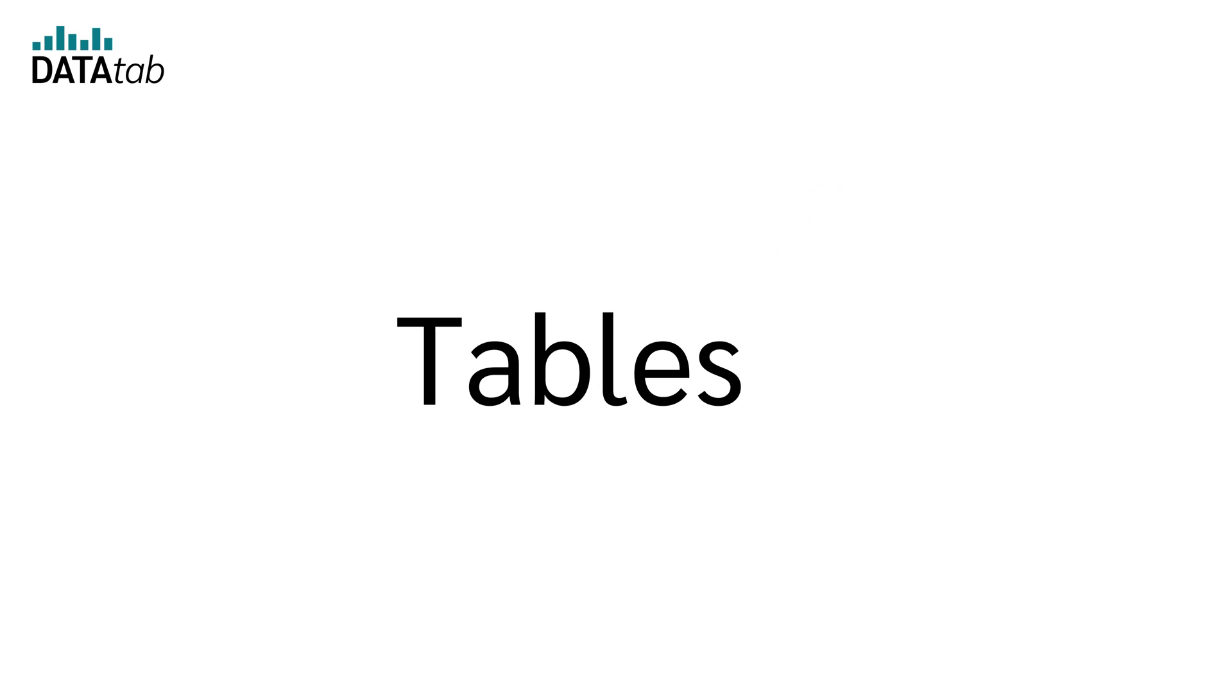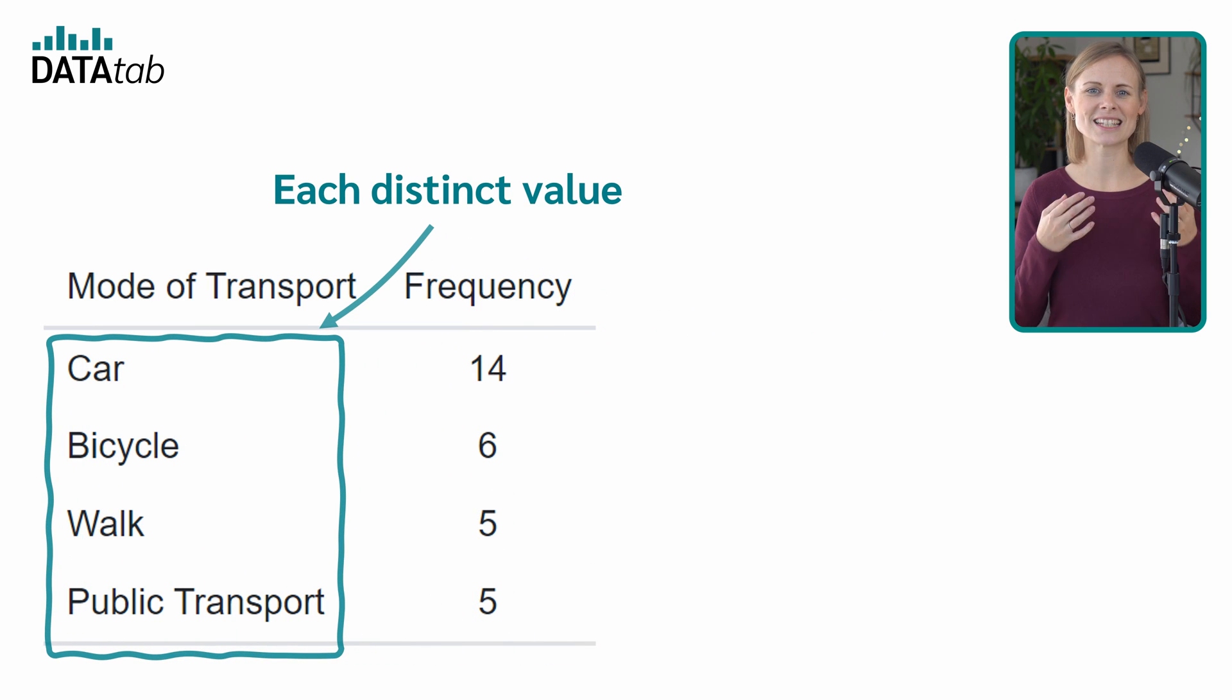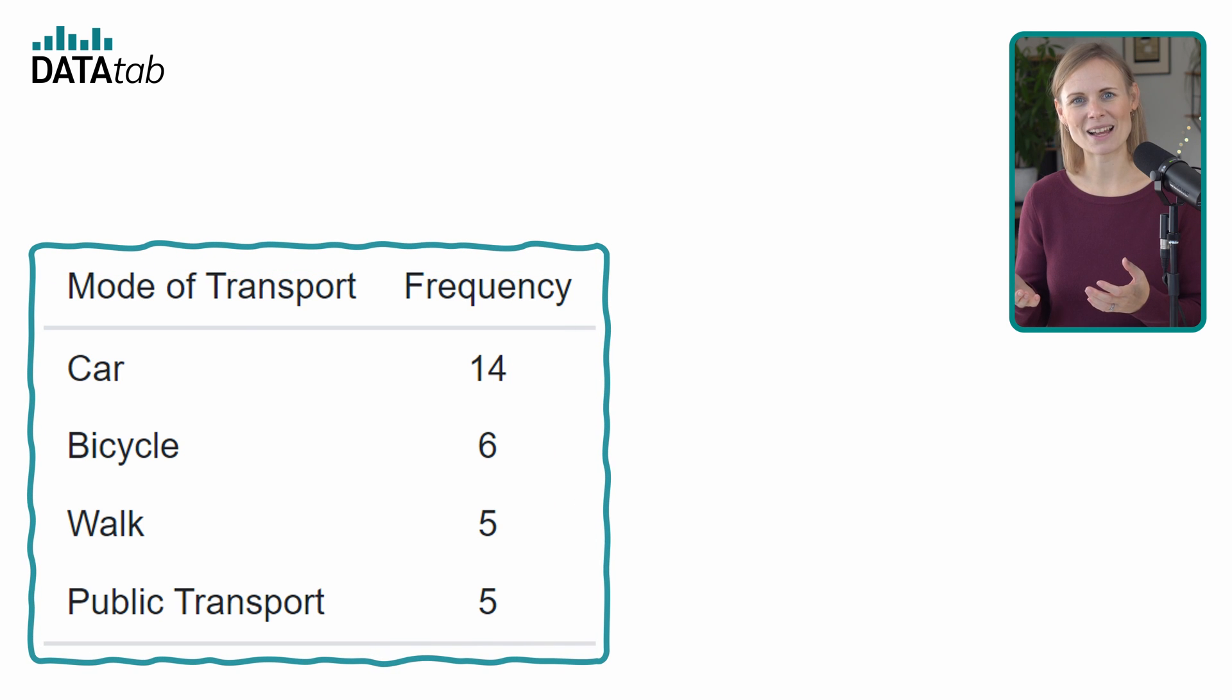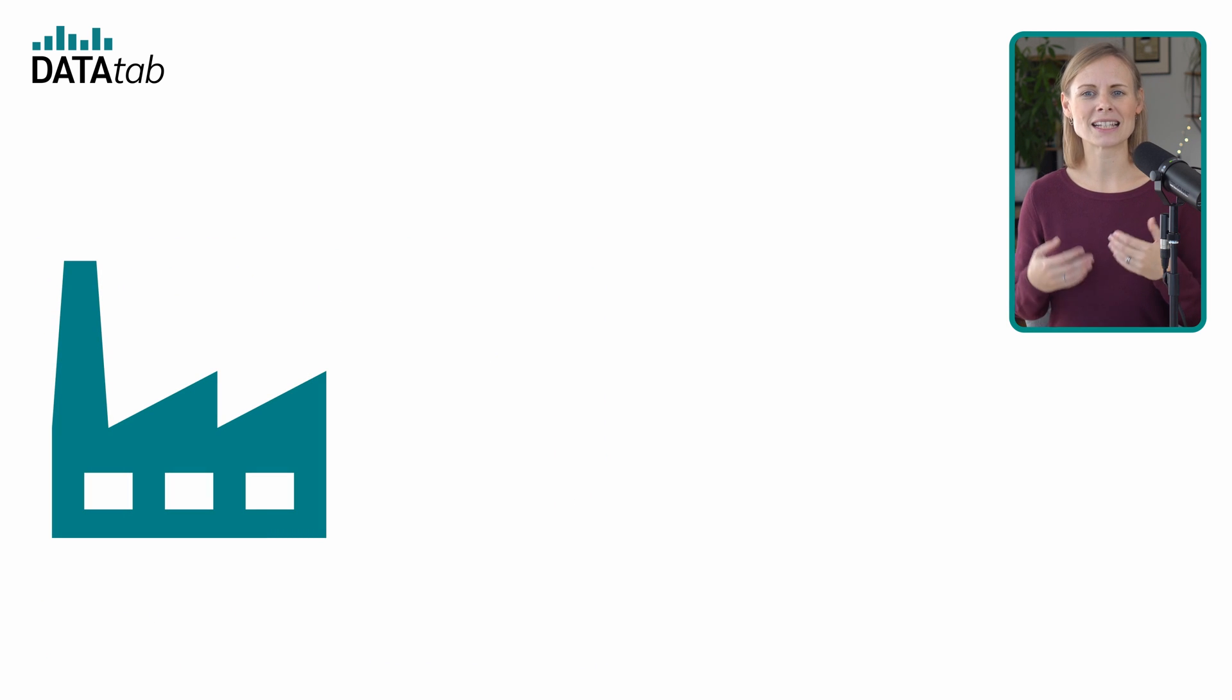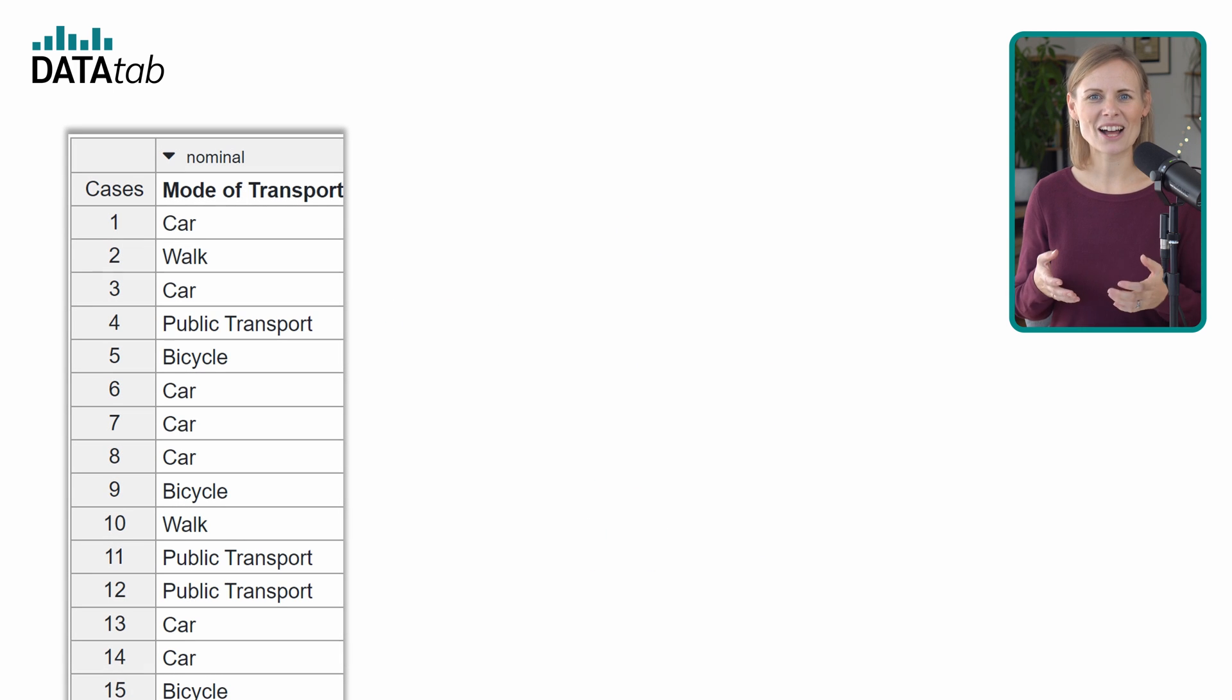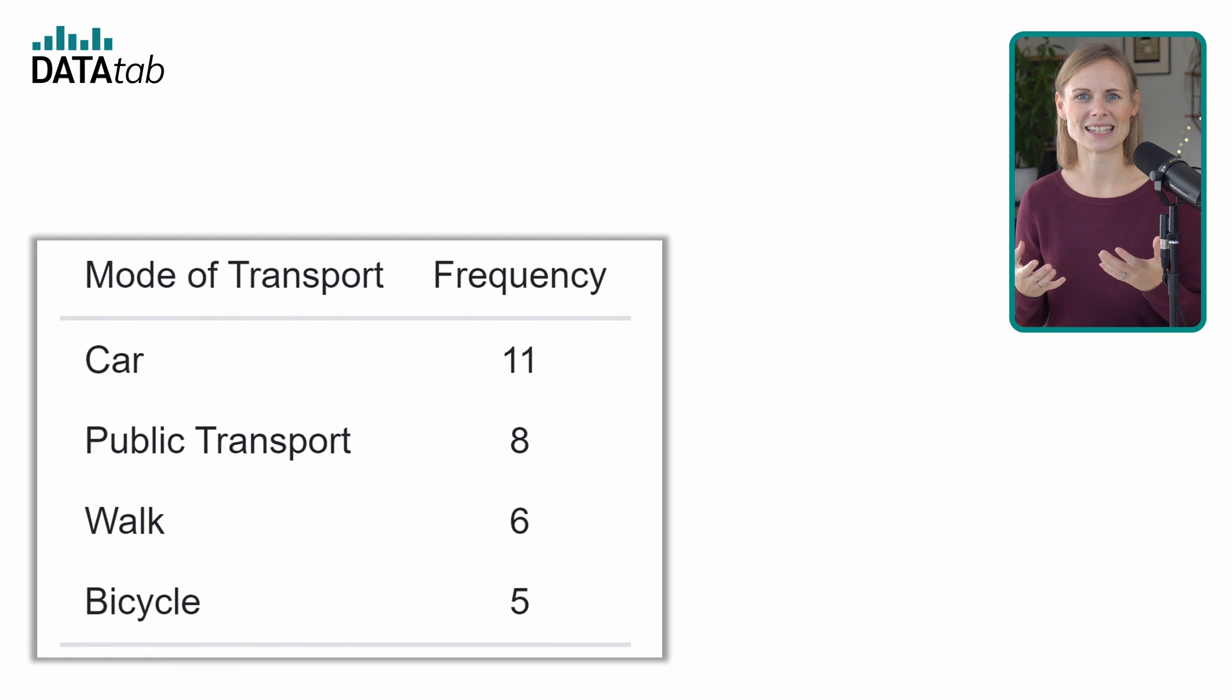Let's move on to tables. Here we will have a look at the most important ones: contingency tables, also called crosstabs, and frequency tables. A frequency table displays how often each distinct value appears in a dataset. Let's have a closer look at this example. Suppose a company surveyed its employees to find out how they travel to work. The options given were car, bicycle, walk, and public transport. Here are the results from 30 employees.